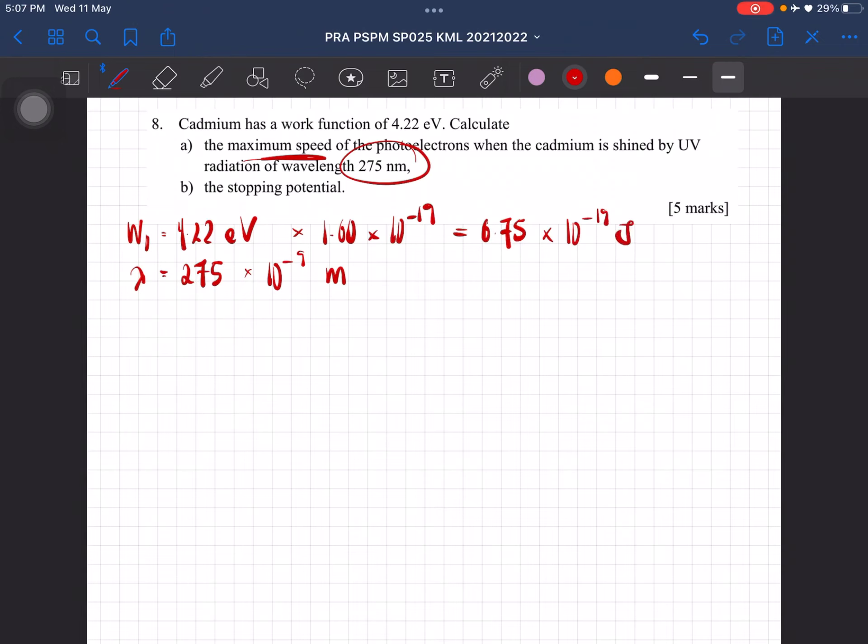So, the maximum speed of the photoelectrons can be calculated using the photoelectric Einstein equation. This is E equal to K max plus W0. So, expand this equation: hc over lambda equals half m v max squared plus the work function.